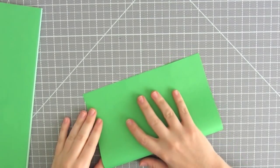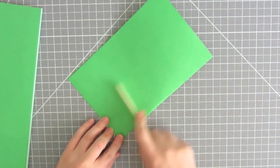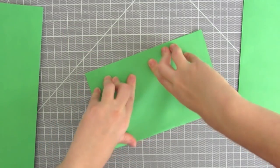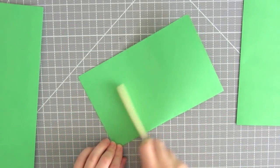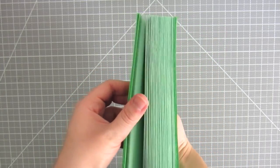Fold each page in half and run the bone folder across the folded edge.